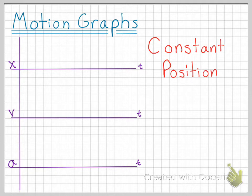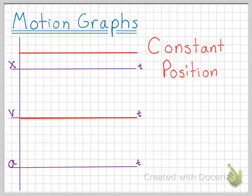This simply means that the object isn't moving anywhere and is stationary, so our position versus time graph would look like this. Since we aren't moving anywhere, our position doesn't change. Since our position doesn't change, our velocity is zero, and therefore our velocity versus time graph would look like this. Since we aren't changing our velocity at all, our acceleration is zero, and therefore our acceleration versus time graph would look like this.